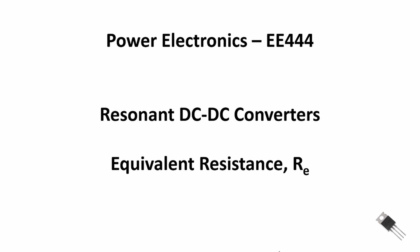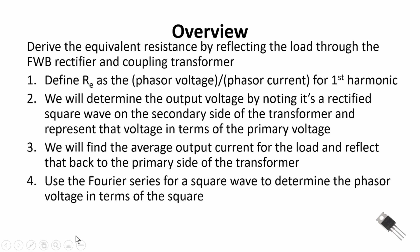Welcome back to Power Electronics. We continue with our series on resonant DC to DC converters. In this quick video, we're going to show how to derive the equivalent resistance RE — that is, the resistance from our load when we reflect it back through the full wave bridge and possibly through either a step up or step down transformer. There's only one topic: the derivation of the equivalent resistance, but there are a couple of steps to do that.